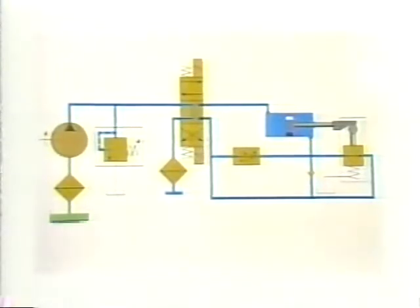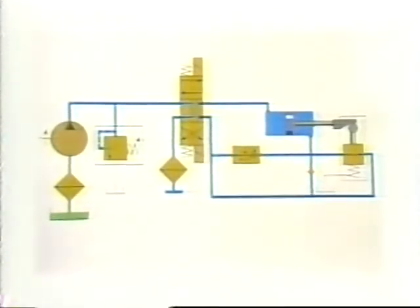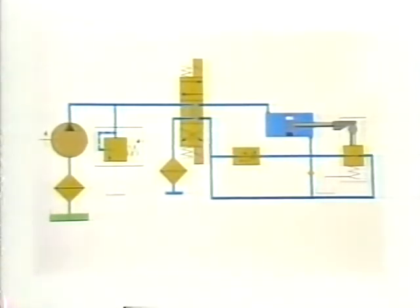Have you noticed these are the same basic units we used before? This time, we'll put a flow control in the exhaust line from the cylinder. A drill might pull ahead as it broke through the work, so a meter-in or bleed-off circuit wouldn't do. We now can control the cylinder's speed during its entire extending stroke, but that's not quite what we want. We need to move up to the work quickly, then slow down just before the drill contacts the work.